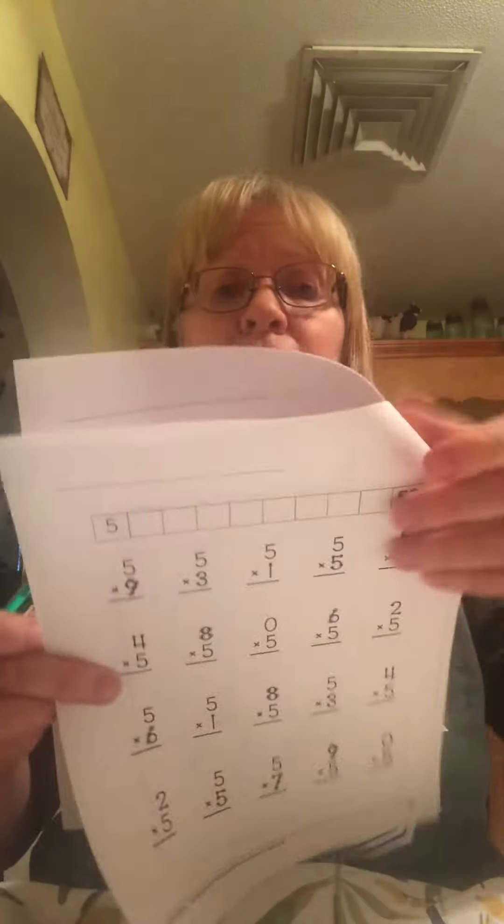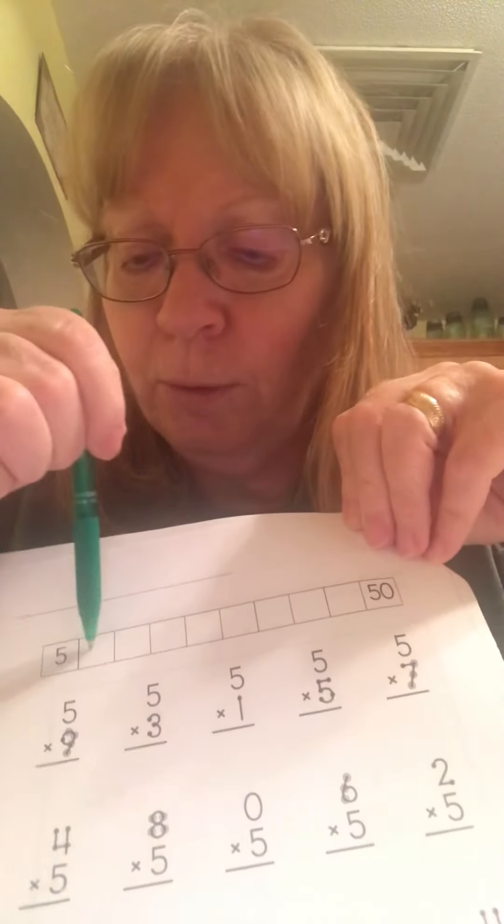Next, you're going to start on the fives. The multiples of five is just like when you learned to count by fives when you were younger — 5, 10, 15, 20, 25, 30, 35, 40, 45, 50. At the top of the page there's a spot to write the multiples of five, so we're going to go ahead and do that right now: 5, 10, 15, 20, 25, 30, 35, 40, 45, 50.